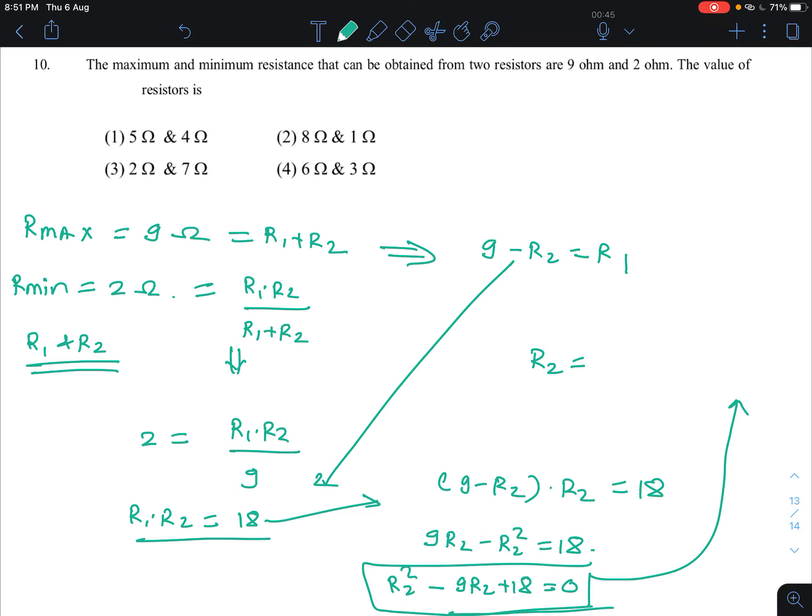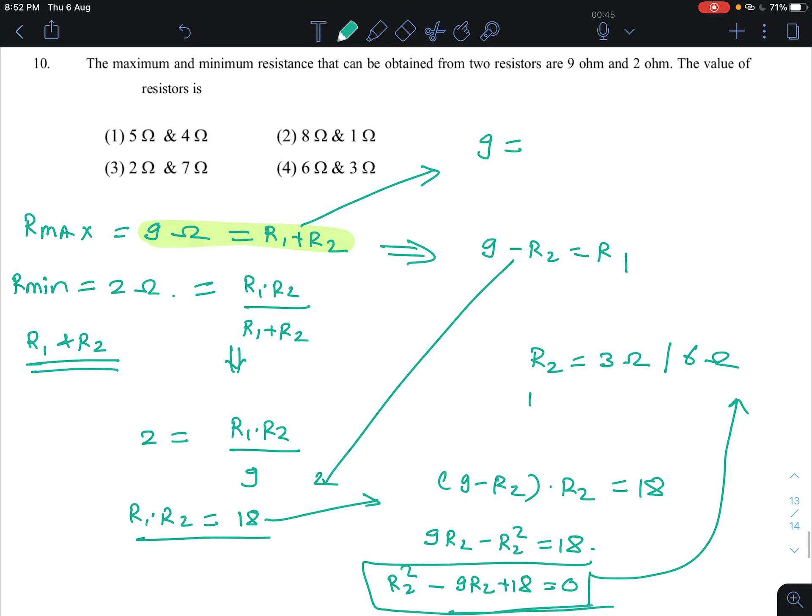You will get 3 ohm and 6 ohm. So let's substitute the value of R2. So if we substitute the value of 9 is equal to R2 to 3 ohm, so we substitute the value of R2 to 3 plus R1.